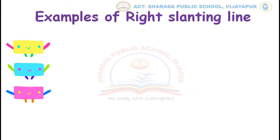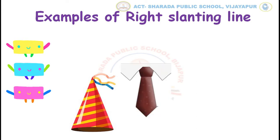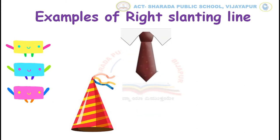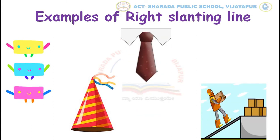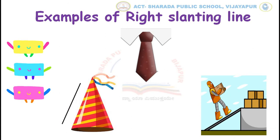Children, can you identify these pictures? Yes, this is a cab, a tie, a man climbing up. Here we can identify right slanting line.